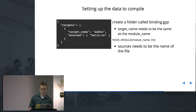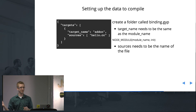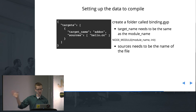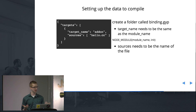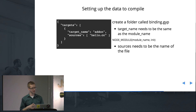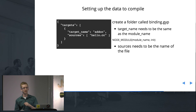Setting up the data to compile: this is pretty much all you've got to do inside the binding.gyp file. You just have targets, target name which is addon, and the node module targets addon. The sources is just the file name — we named it hello.cc. So as long as you have these two things and you're looking at the right file and the right target name, you should be good to go.